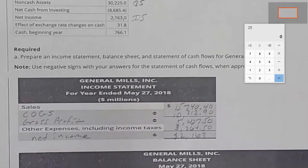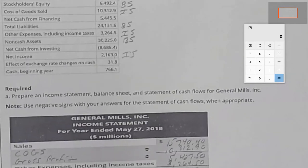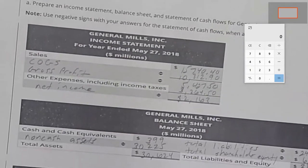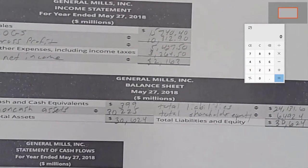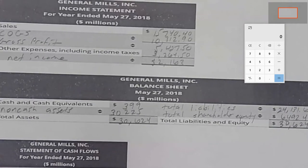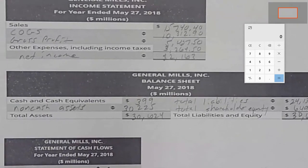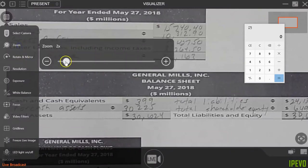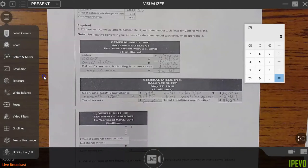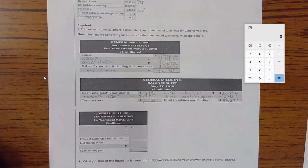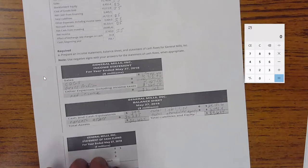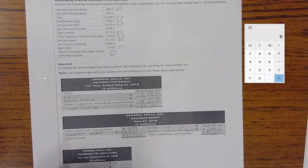We put together an income statement based on the numbers we had above, and then we labeled the items that we used as income statement items. And then we made a balance sheet, and we labeled items on the top as balance sheet items.